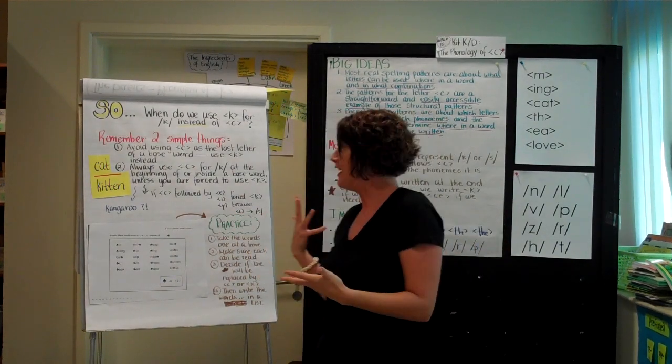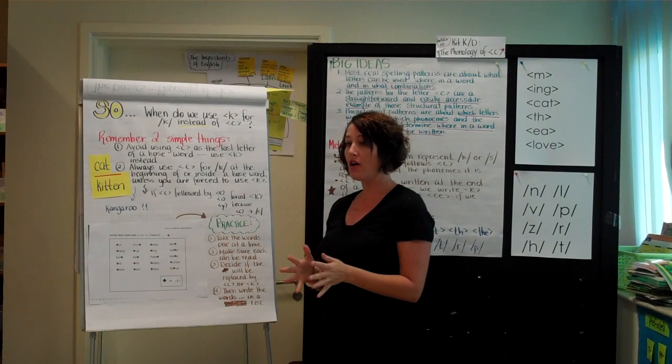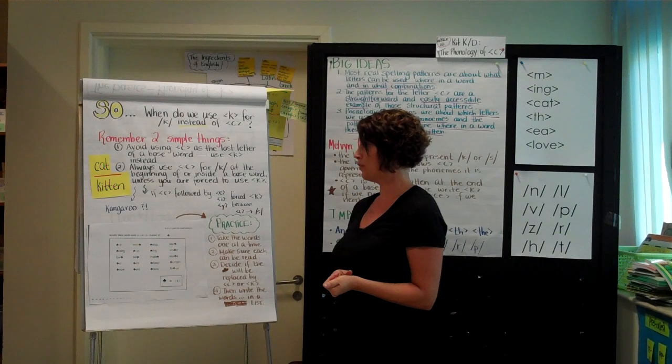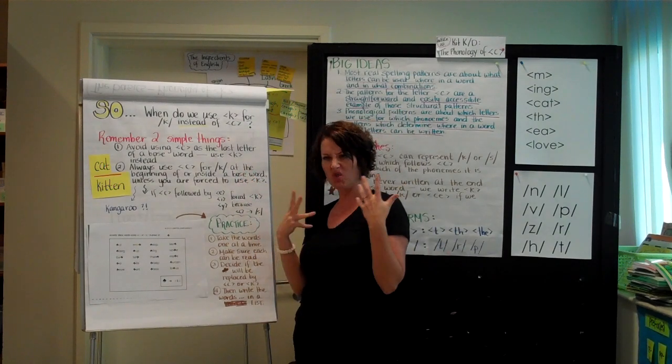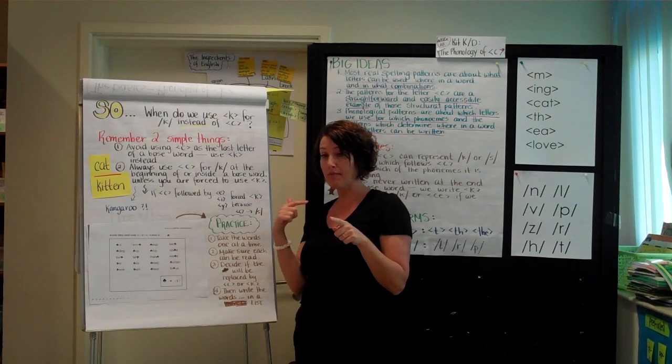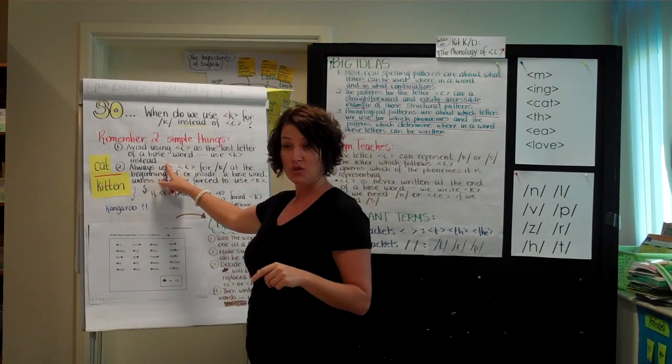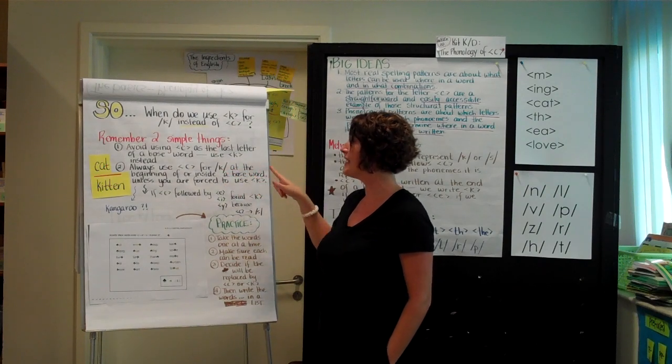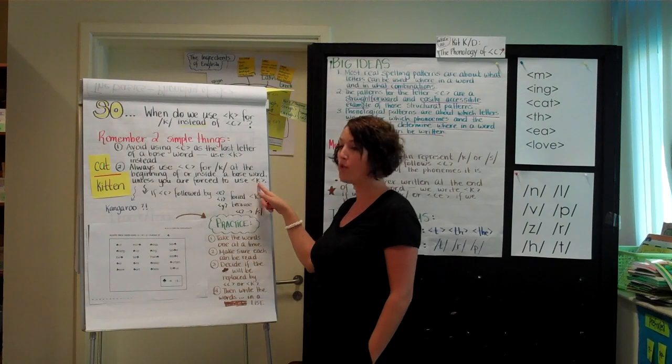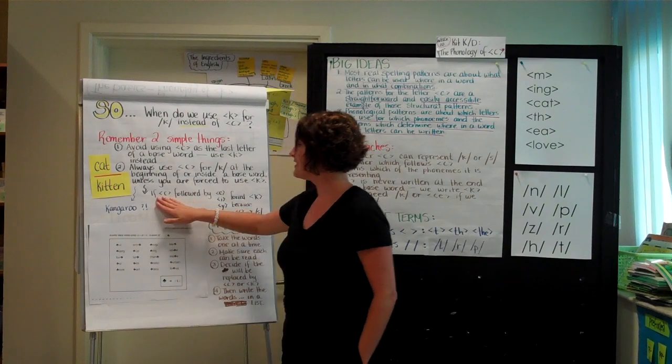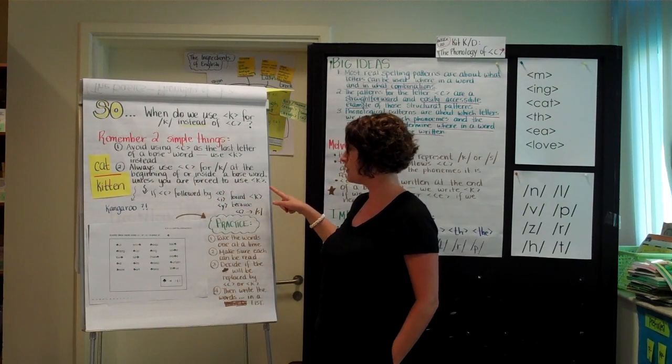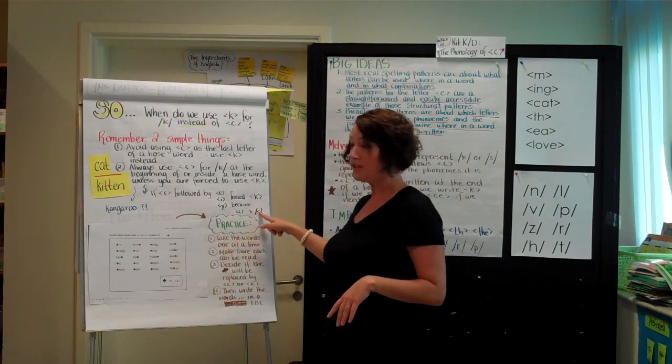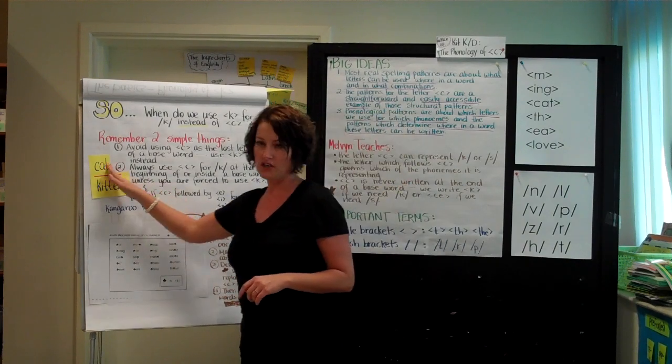So then you get to, well, how do we know? Is it a C or a K that we're going to use to make the /k/ sound? And there are two simple things that kids can remember and an illustration that will help you show them. We avoid using the C as the last letter of a base word. We try to use K instead. And as a proficient speller, I can sort of see that because I don't know words that I see the letter C at the end. In my mind, they're always going to be CE. And that's something that you could tell them. That would be the only time we'd notice it. There always seems to be an E there and then it changes what it's saying. Always use the letter C for this /k/ at the beginning of or inside a base word unless you are forced to use the K. Which brings you back to the start of the theme. And that is that if the C is followed by E, I, or Y, you are forced to use the letter K because otherwise the C would make the /s/ sound. The illustration does this better than I'm trying to say it.